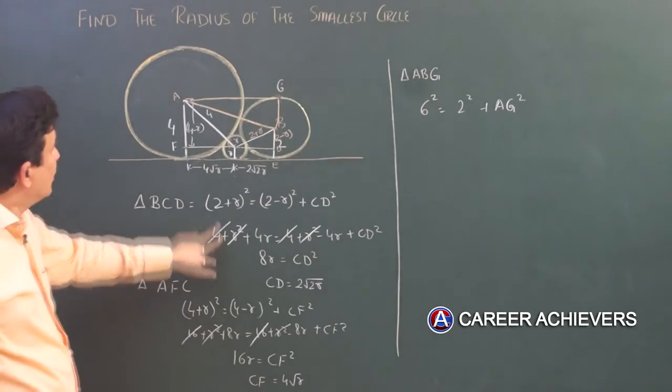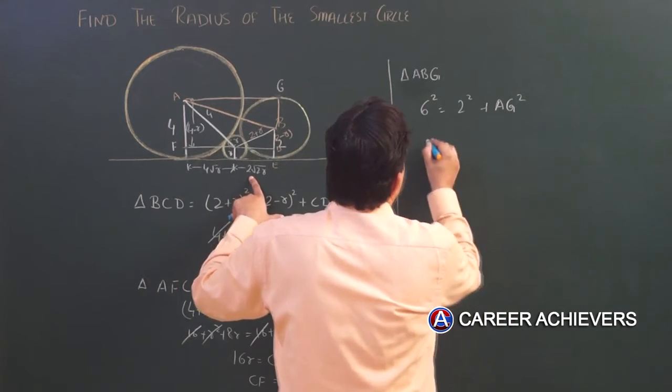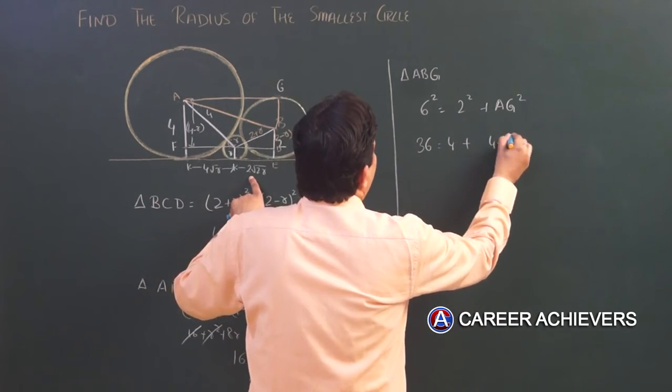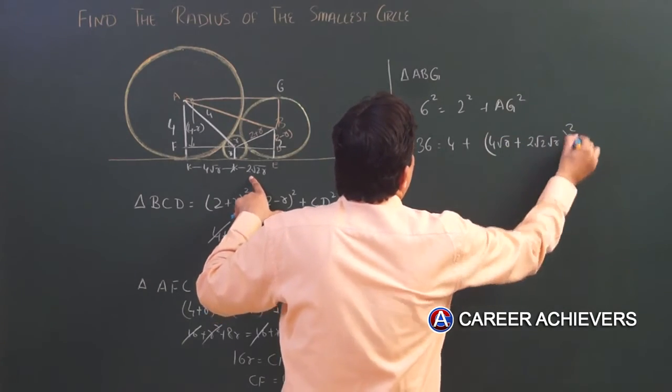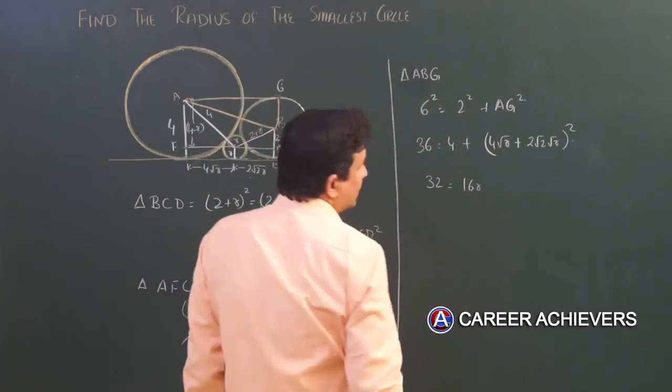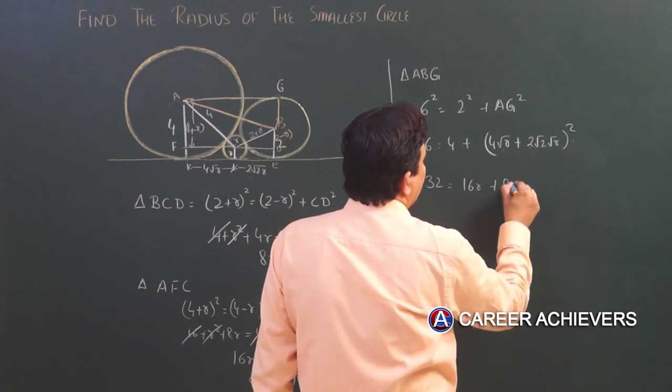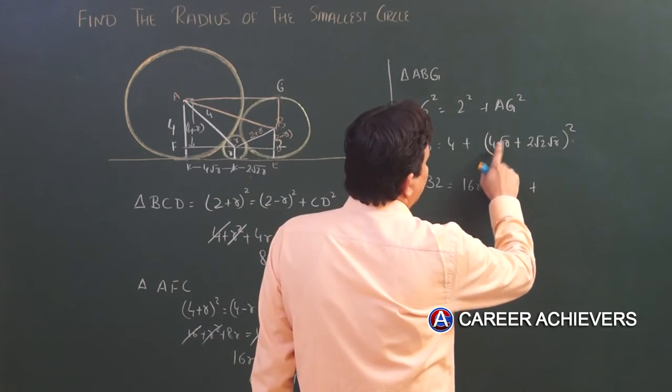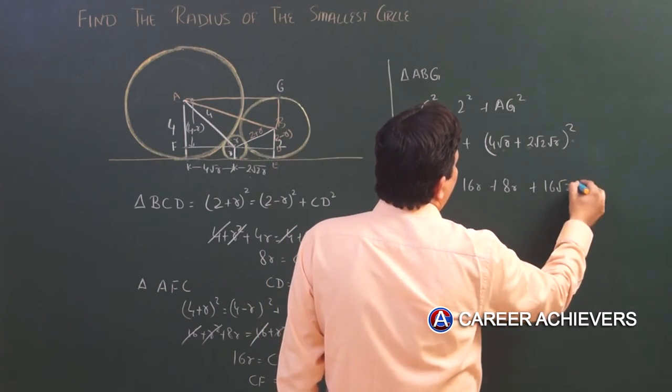Very good. AG, which is 4√R plus 2√(2R), so I'll take this to the other side. 36 equals 4 plus (4√R + 2√(2R))². 32 equals 16R plus 4×8R plus 2×4, that's 8, so 16√(2R).